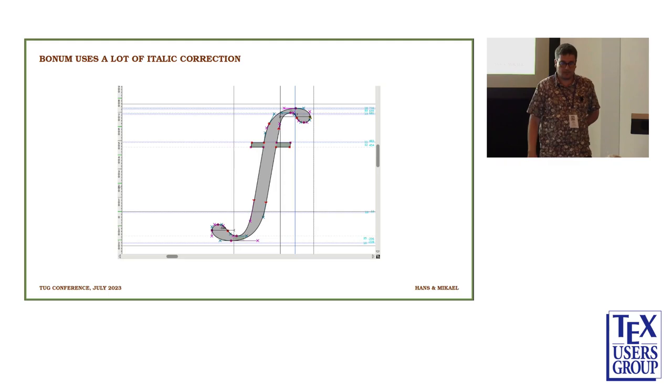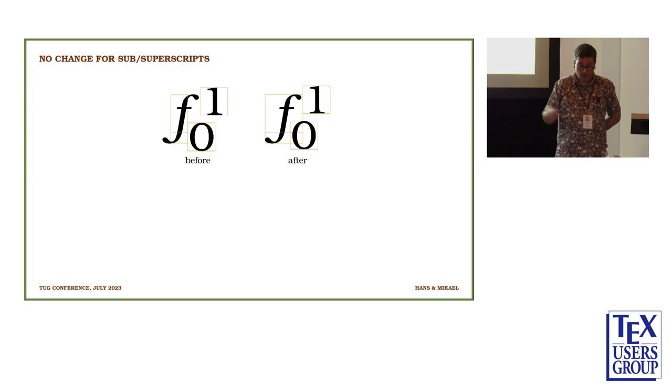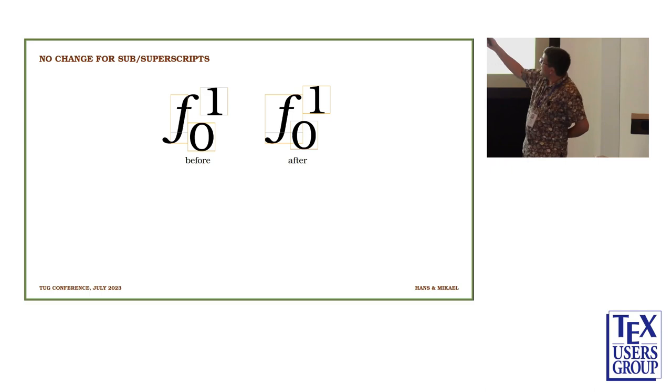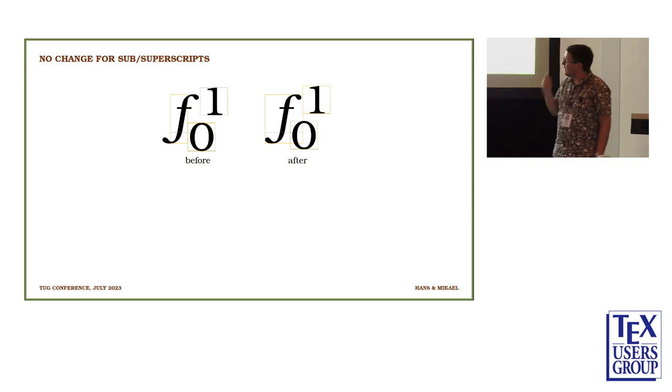So let's look again. This is Bonum. It sticks out a lot. It has a lot of italic correction when we look at the font. When we put subscript and superscript on it, the left picture is before, how it looked before. It looks fine, just because the one is controlled by the italic correction. But for the subscript, that's forgotten. It's put without adding any italic correction.